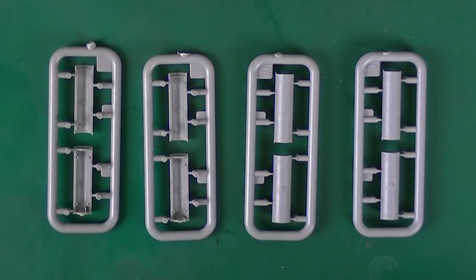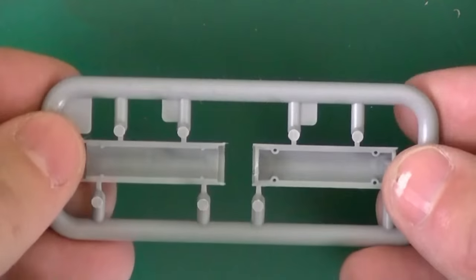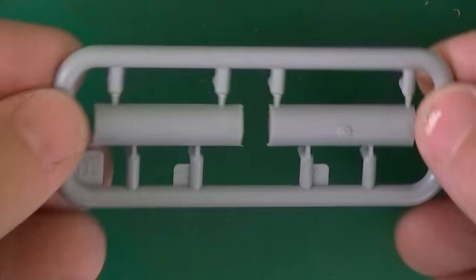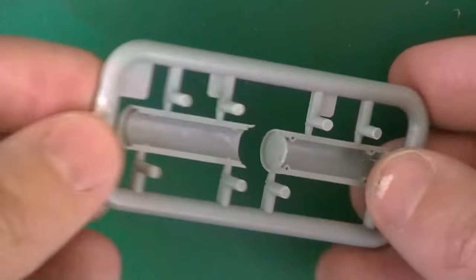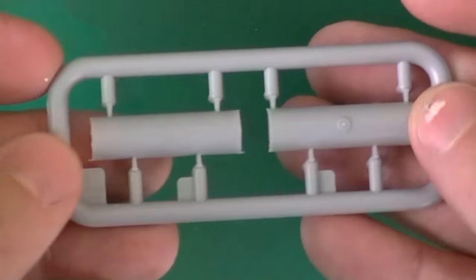And we have four of this sprue. This is just our fuel tank halves. Now you're going to have a seam on there but besides that they look okay.